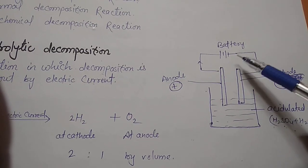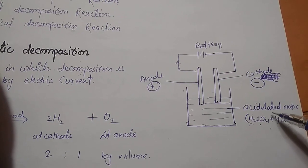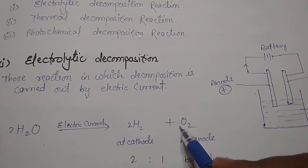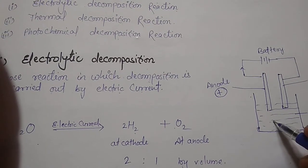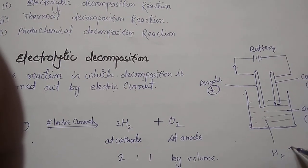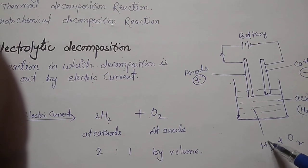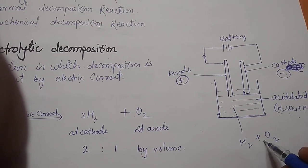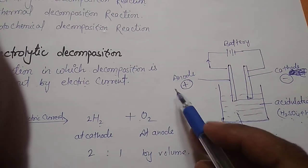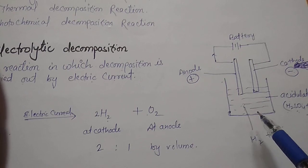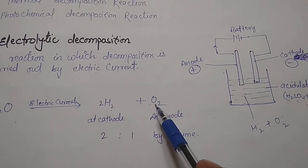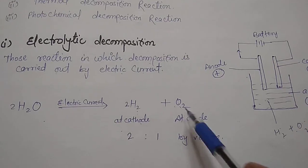When we switch on the current through the acidulated water, the water decomposes and gives two products: one is hydrogen gas and the second is oxygen gas. Hydrogen is positively charged, that is why it gets attracted towards the negative electrode (cathode). Oxygen is negative, that is why it gets attracted towards the positive electrode (anode). Two gases evolve in the form of bubbles — hydrogen deposits at cathode and oxygen deposits at anode.